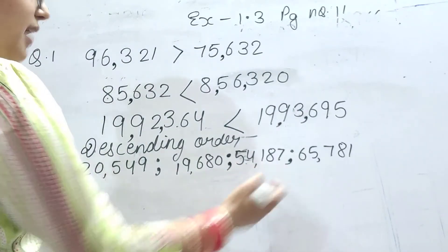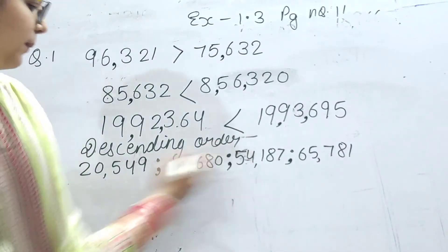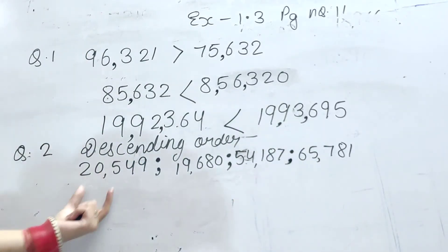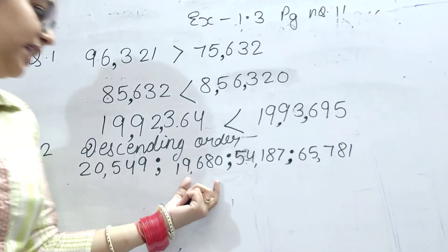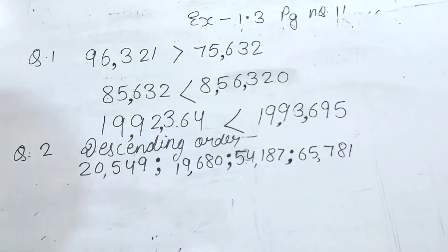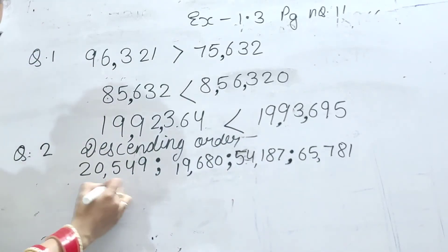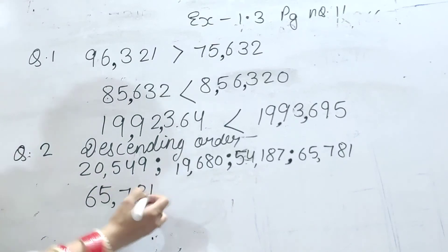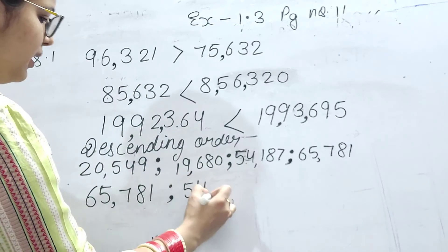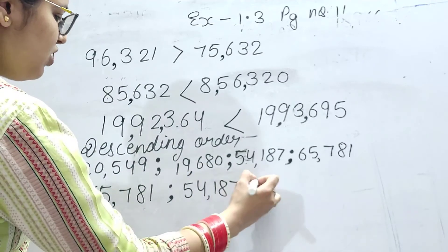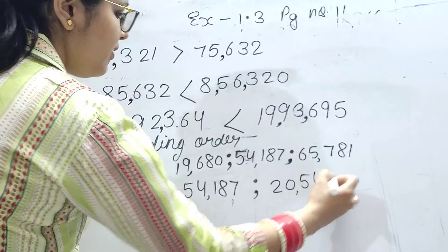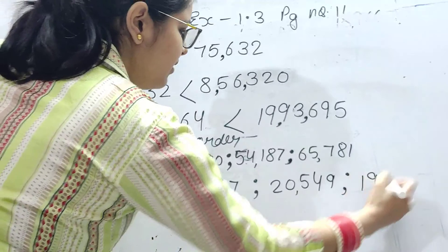To yaha pe sabse bada number kaun sa hai? Dekho, saare bachche dhyan se. 20,549; 19,680; 54,187; 65,781. To yaha pe sabse bada number hai 65,781. Usse chota 54,187. Usse chota 20,549. Aur sabse chota 19,680.